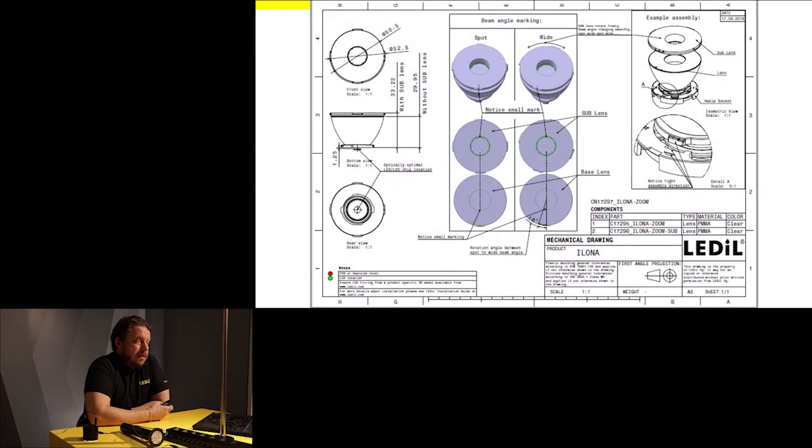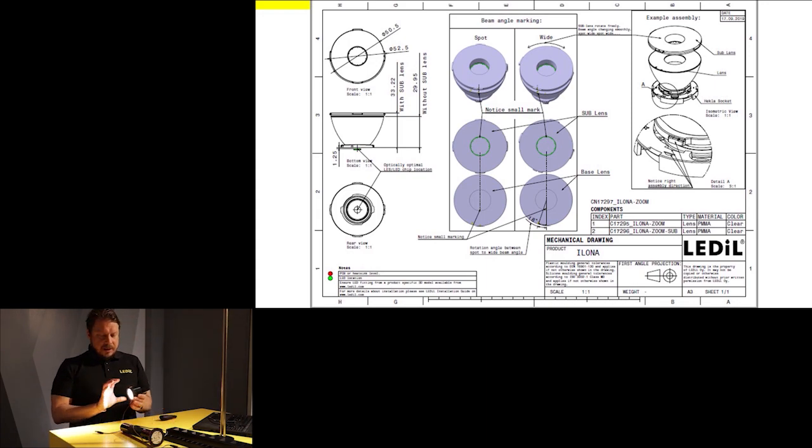Here you can see the drawing. Some of you may be wondering how to position everything inside your luminaire, what is the correct distance of the sublens, etc. Well, correct position for the sublens is quite easy. You just have it on top of the lens. The sublens will basically find its position accurately from the lens where it's mounted.